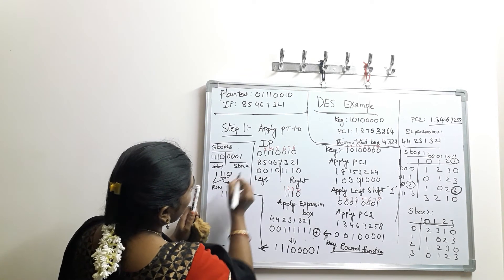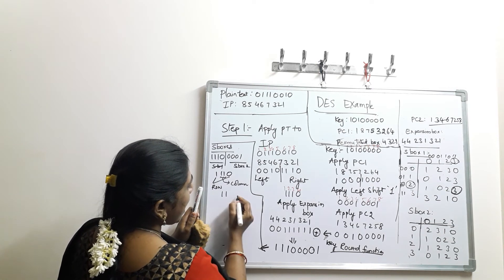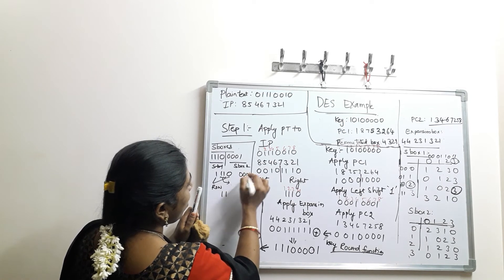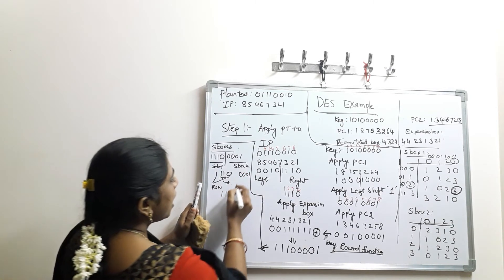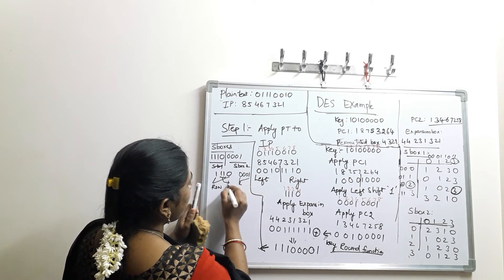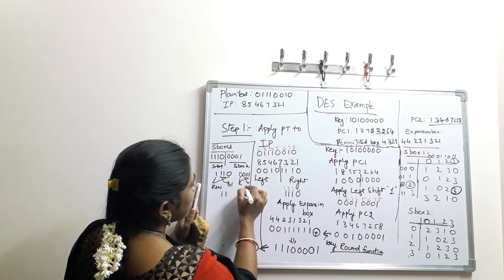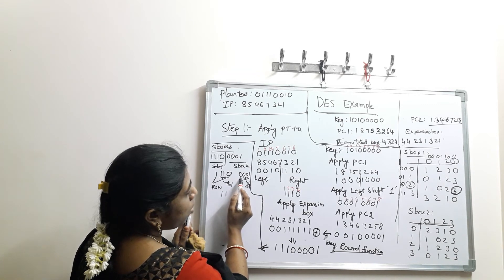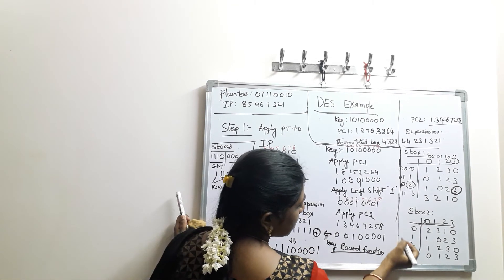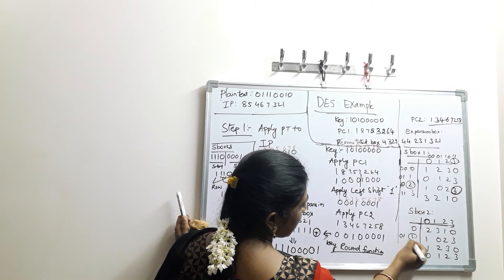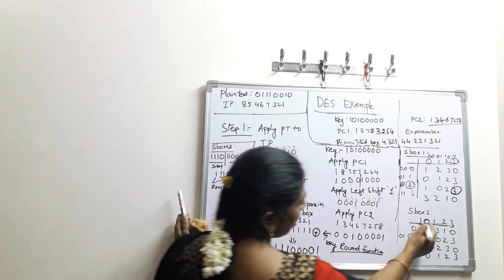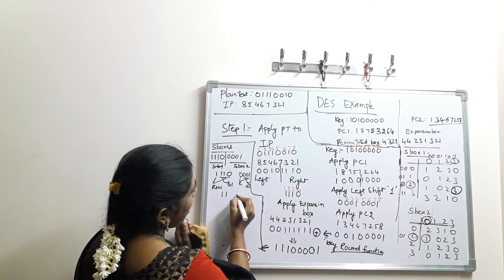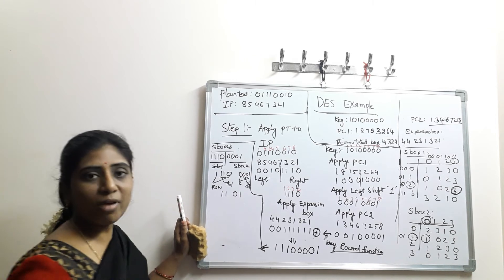For S-box 2, the input bits are 0, 0, 0, 1. The row bits are 0, 1 representing row 1, and the column bits 0, 0 represent column 0. Looking up S-box 2 at row 1, column 0, the output is 1, giving output bits 0, 1.